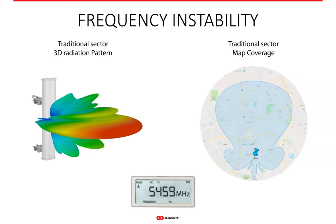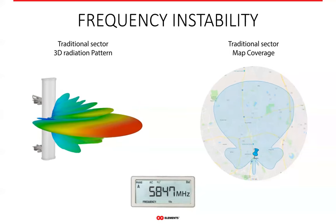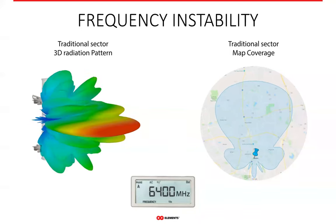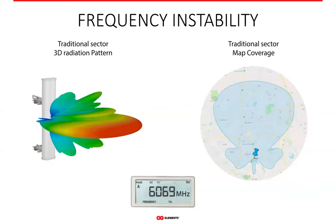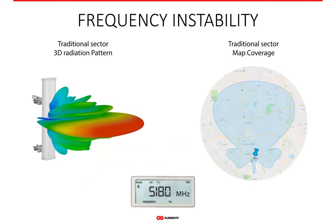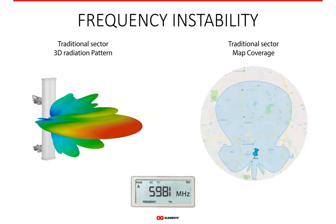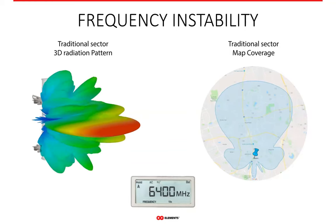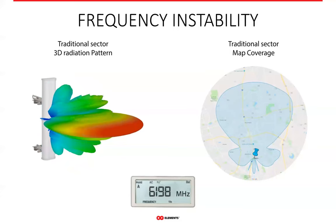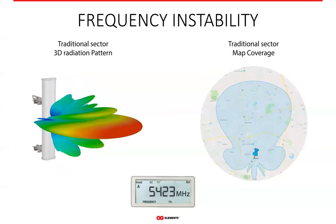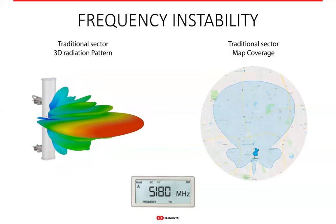Most patch array sector antennas have many side lobes, and unfortunately also a main lobe that changes with frequency. This results in coverage that fluctuates — perceived especially by customers at the edges of the sector as unstable throughput. The fact that side lobes change their shape and direction throughout the spectrum also influences what you see at each frequency. You cannot rely on what you see for one frequency being the same on another, simply because the side lobes are changing directions.